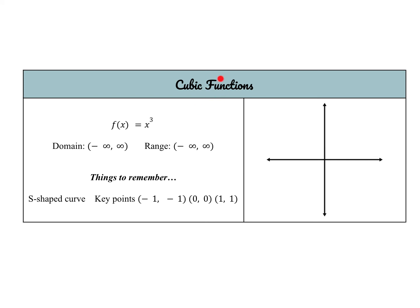Now let's look at our cubic function. The parent function y equals x cubed makes an s-shaped graph — similar to our quadratic except the negative portion is reflected. Both domain and range are all real numbers, because a positive number cubed is positive and a negative cubed is negative. Key points you can always use to transform are negative 1, negative 1; 0, 0; and 1, 1.